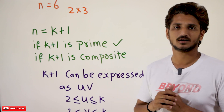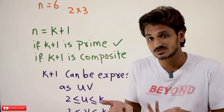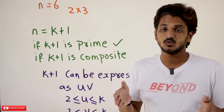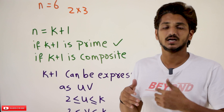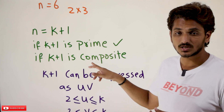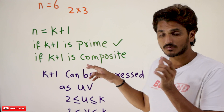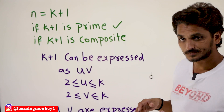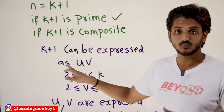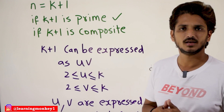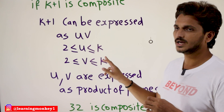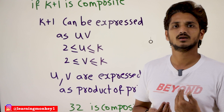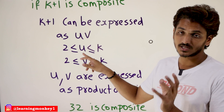But what happens if k+1 is a composite number? What is the meaning of a prime number? A prime number can be divided only by one and the number itself — no other number between one and the given number is able to divide it. A composite number means some number between two and the given number is able to divide it. So if k+1 is composite, it can be expressed as u × v, where u and v are numbers between 2 and k.